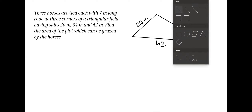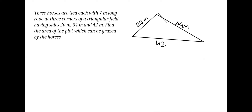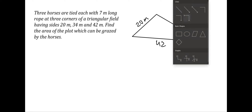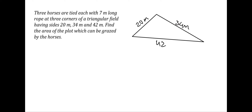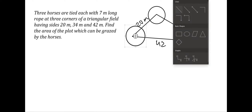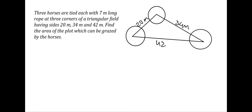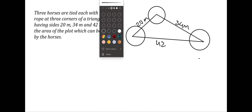The horse tied here with a rope can graze an area around it in a circular path. The area it can graze has to be between the two sides of the triangle. I'll make circles around each corner — all three circles have equal radius of seven. We need to figure out the area which each horse can graze.